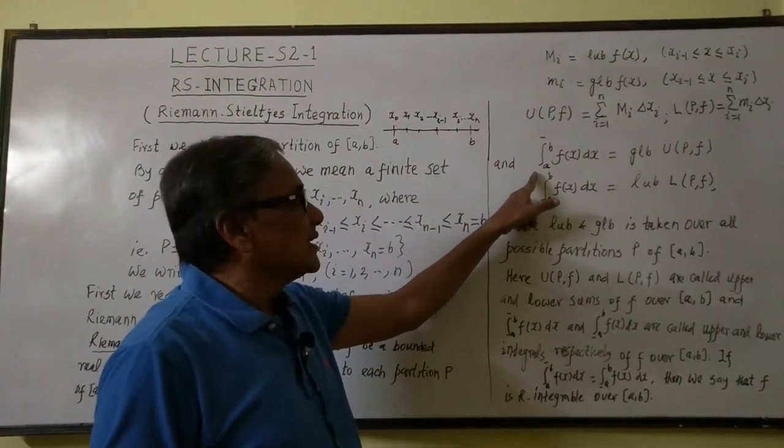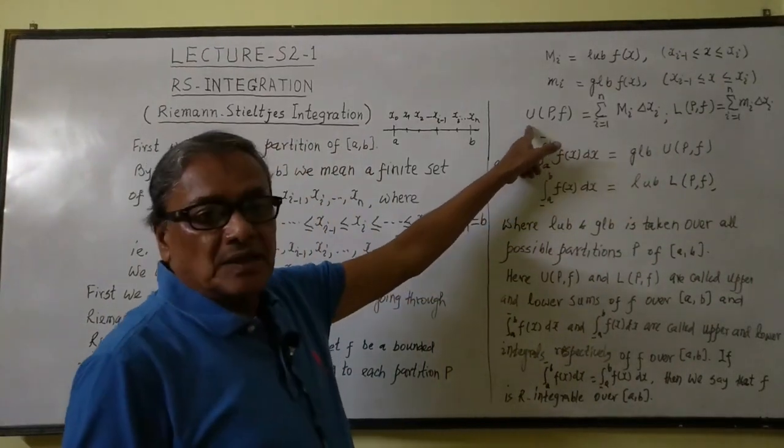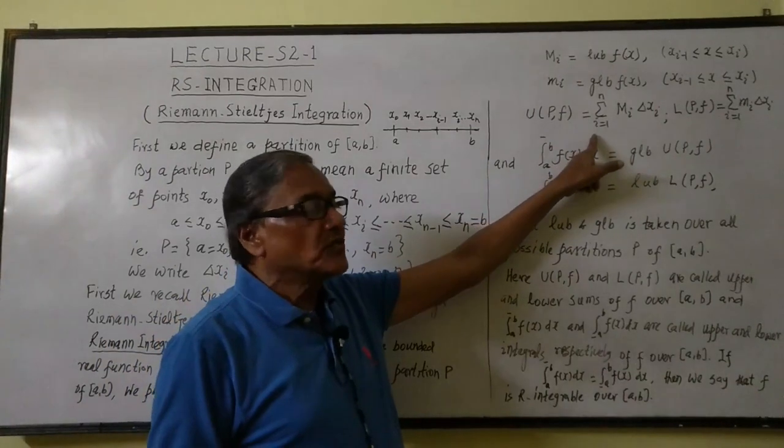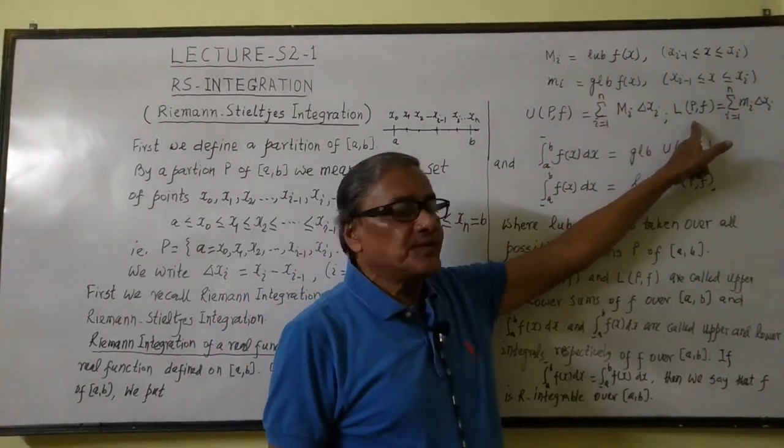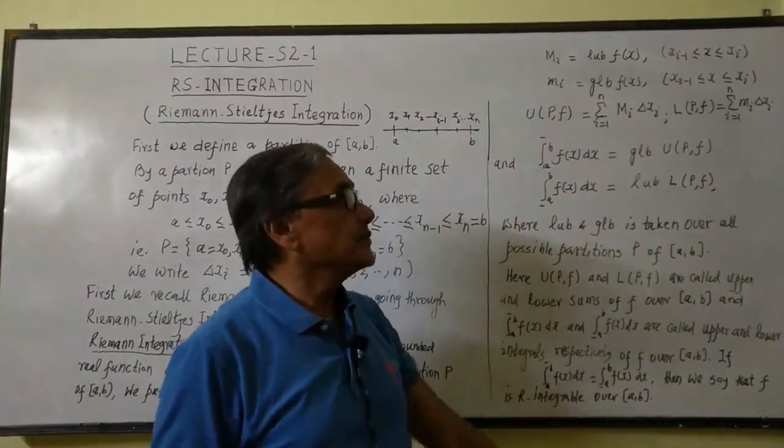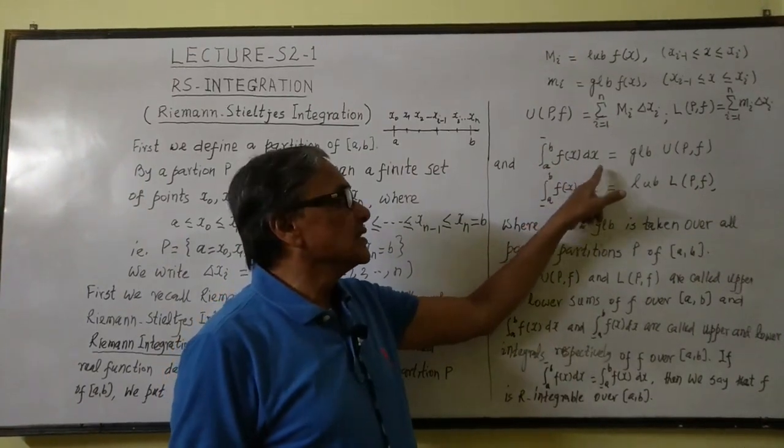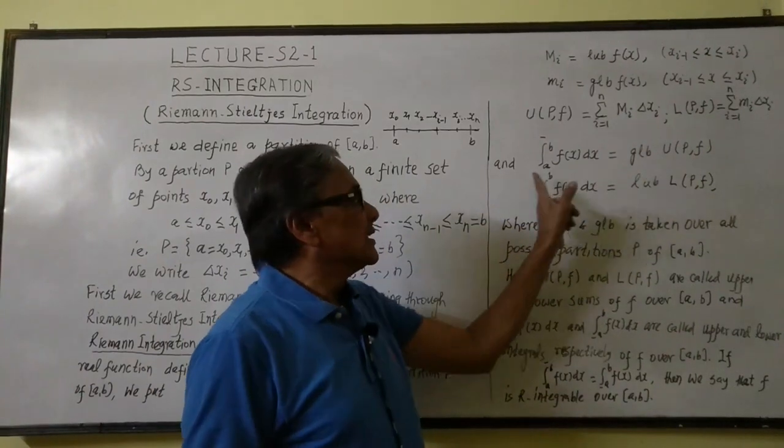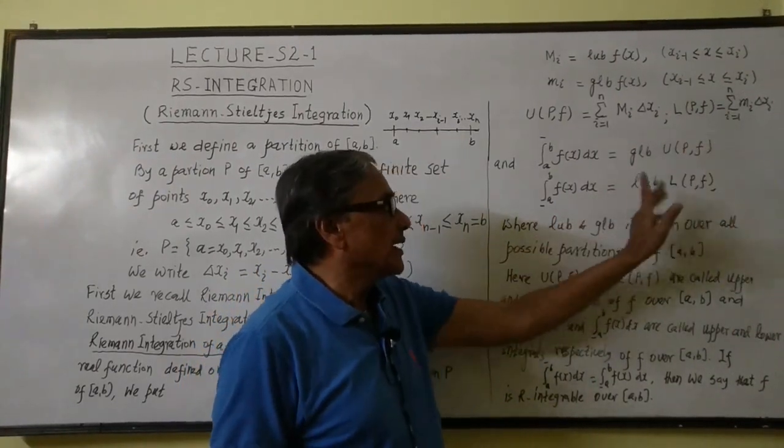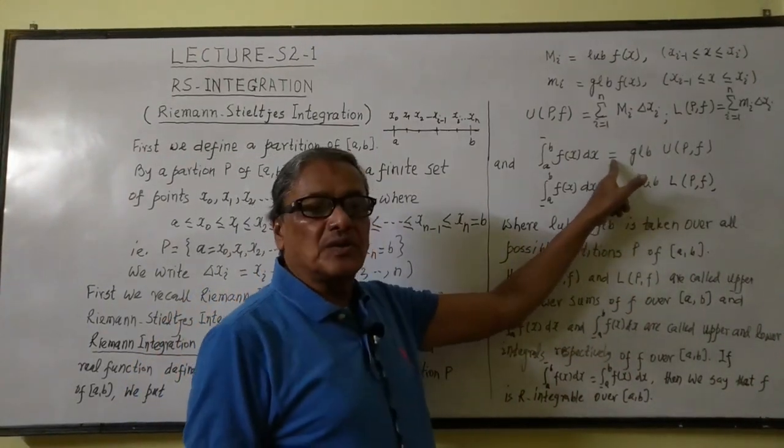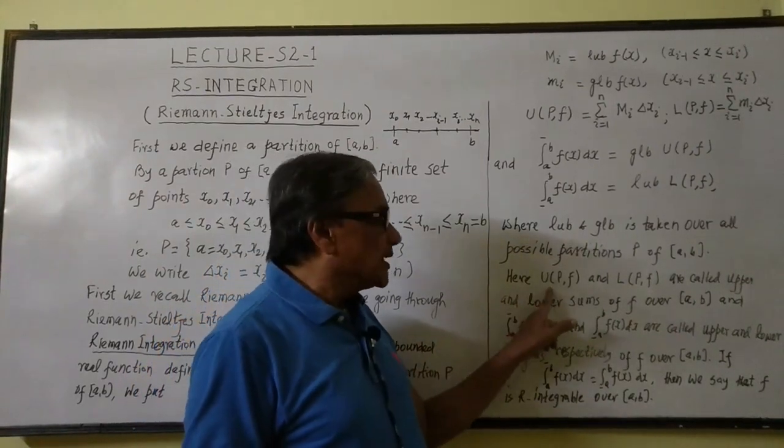And we denote U(P,f) equal to sigma MI delta xi where i is from 1 to n, and L(P,f) equal to sigma mi delta xi, i equal to 1 to n.